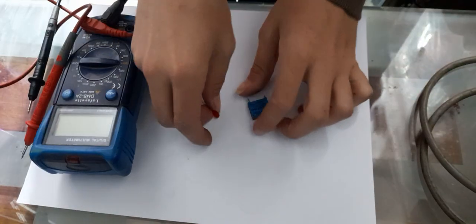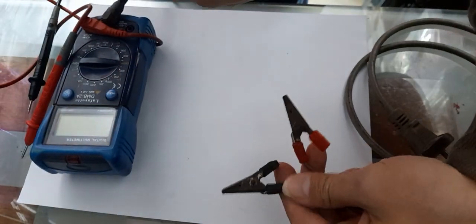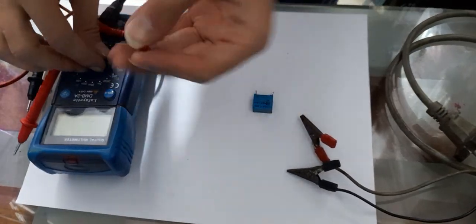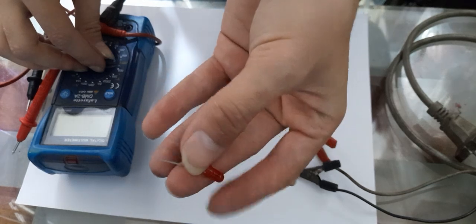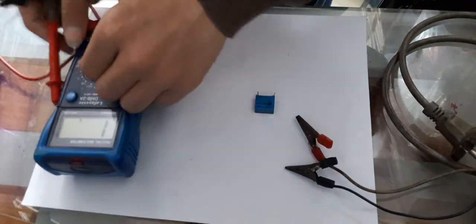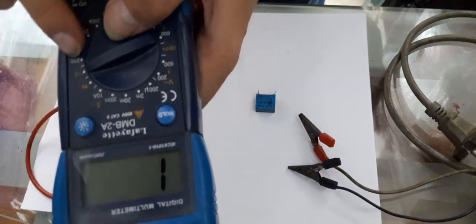Hi guys, today I will show you how to light an LED diode with a capacitor on a 230-volt main power line. First, let's check if the diode works. We'll put the multimeter at